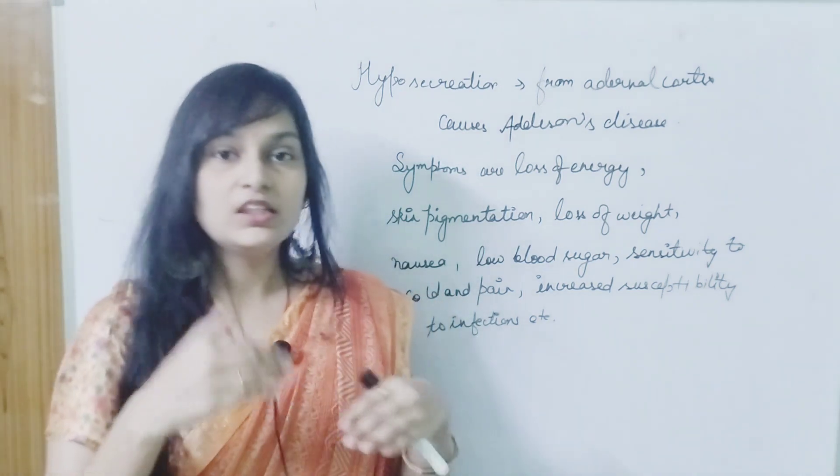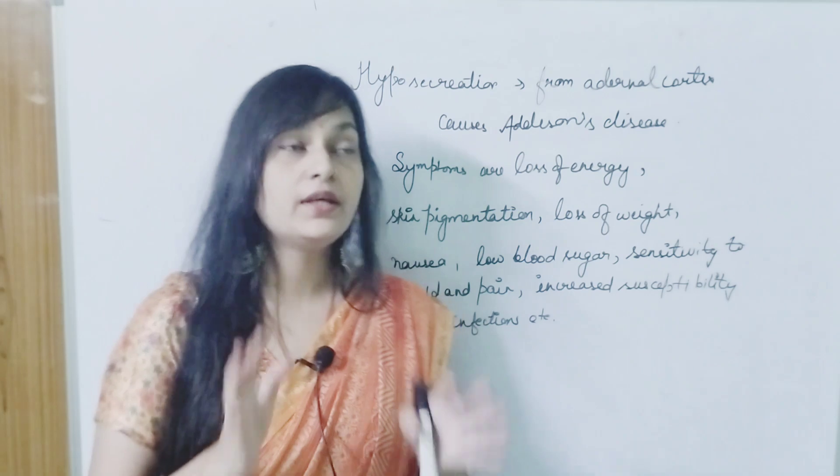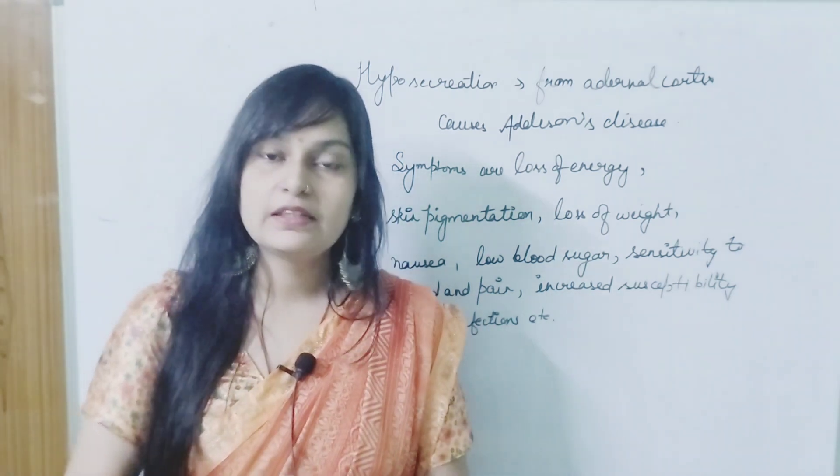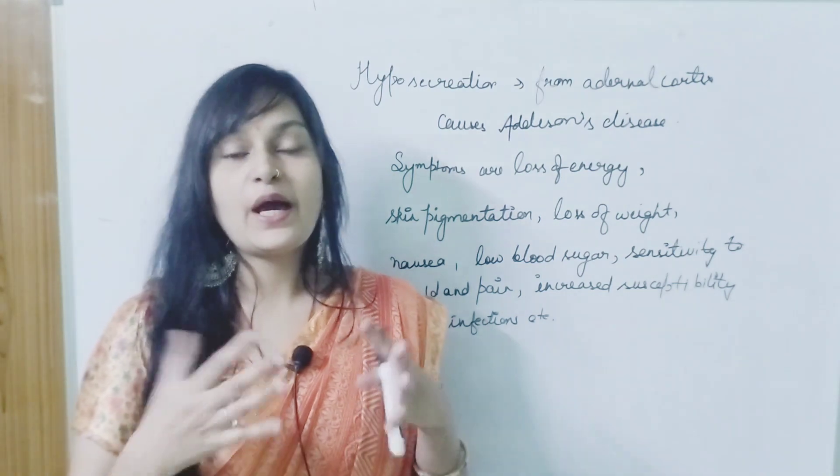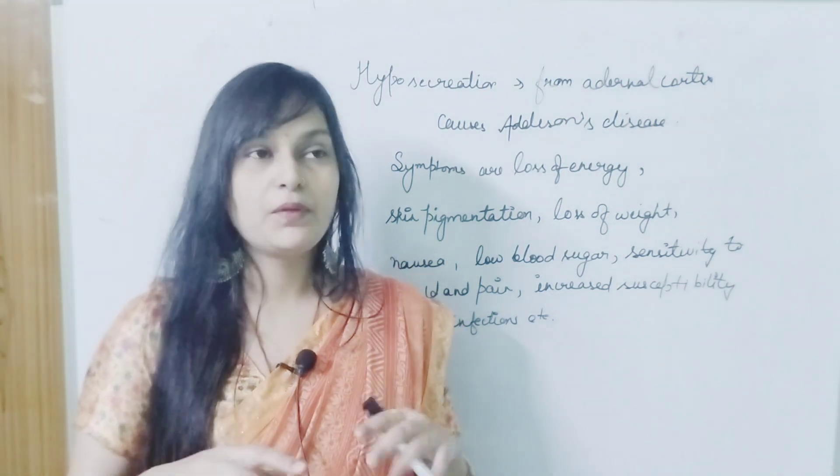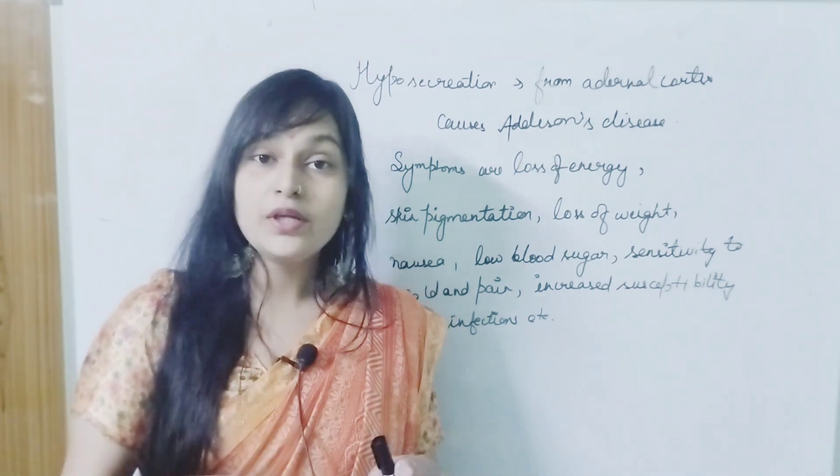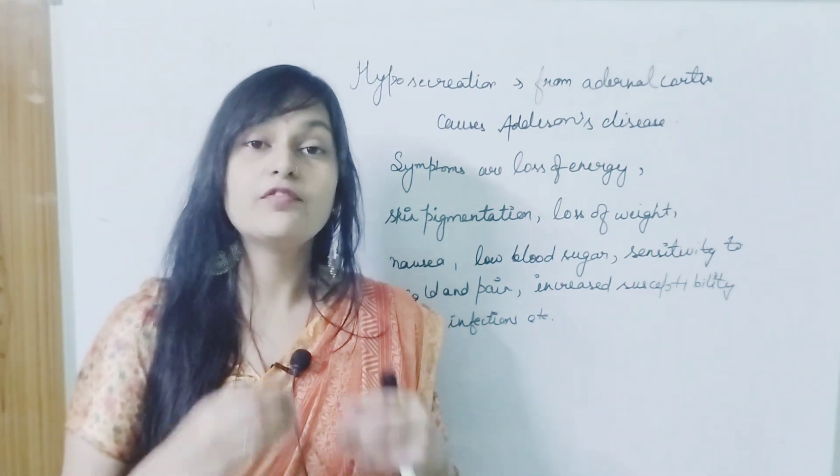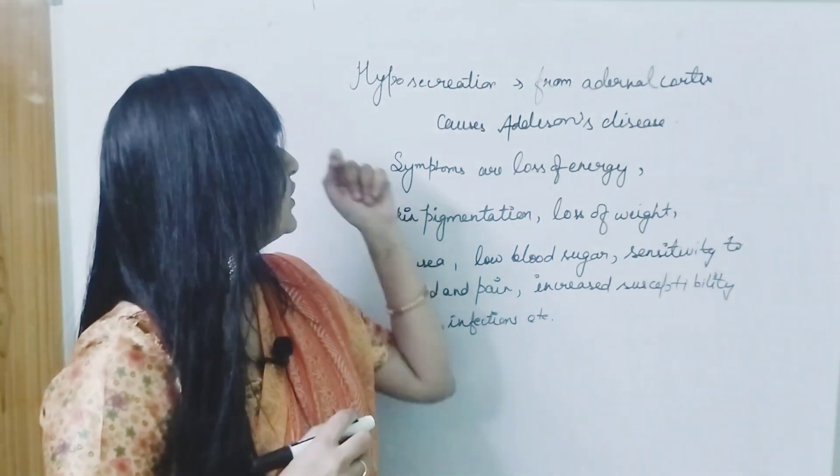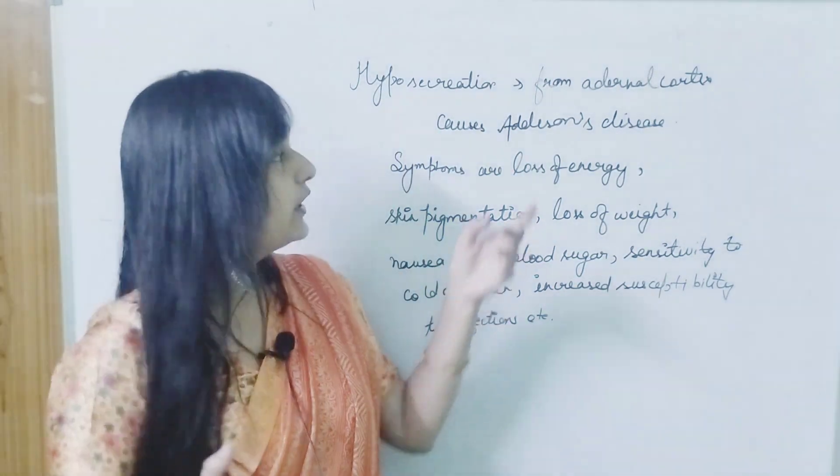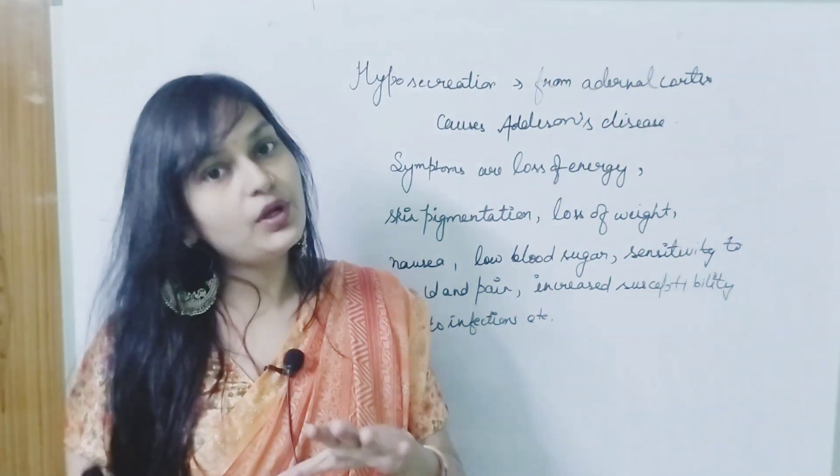First of all, we have learned that glucocorticoids and mineralocorticoids are secreted. However, these hormones are secreted by hypersecretion or hyposecretion. Hyper means more, hypo means less. If there are two conditions, either hyper or hypo secretion.